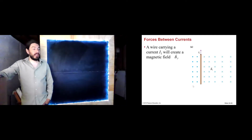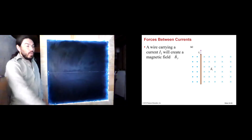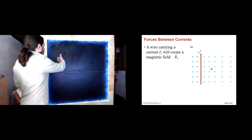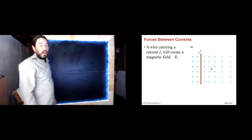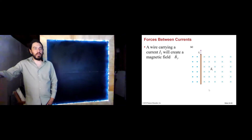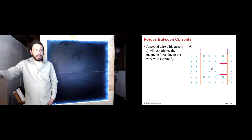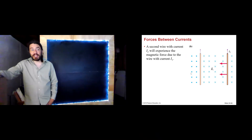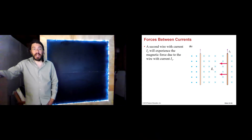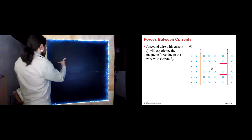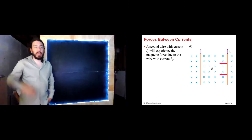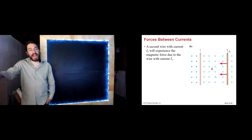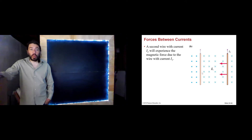On this slide we see a current-carrying wire, and this is the field created by that wire. We could use right-hand rule number one to confirm that a wire carrying a current upwards will have a field that is out of the board on the left and into the board on the right. What if I run another wire in the neighborhood of this first wire? Will it experience a force? Yes, it will. Using right-hand rule number two: current is up, field is into the board, so the force will be to the left. So wire number two is attracted to wire number one because of the magnetic field created by wire number one.